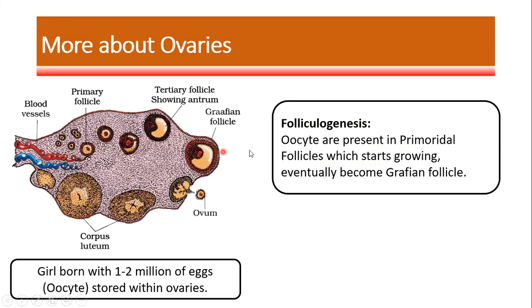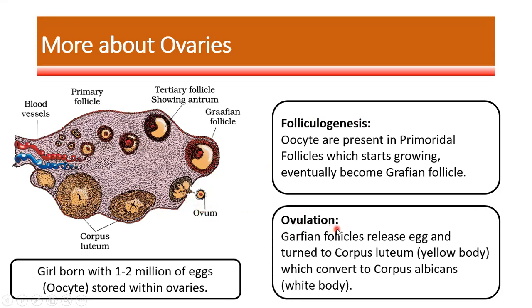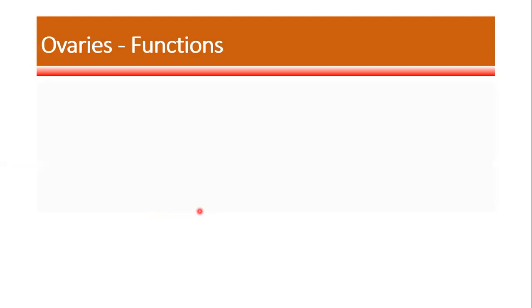The oocytes present in the primordial follicle eventually grow to become a Graafian follicle. Once the Graafian follicle is formed, it releases the egg, also known as the ovum. The process of releasing the ovum is known as ovulation. The ruptured Graafian follicle then turns into a corpus luteum.